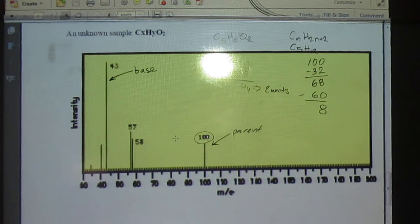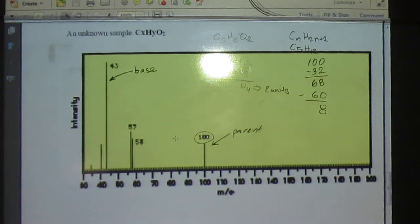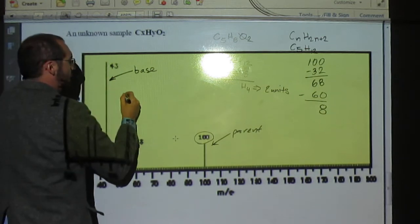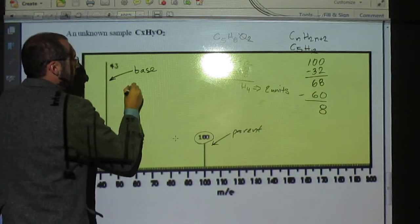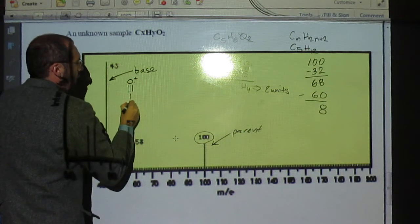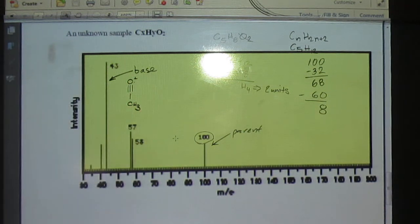So what does that mean? We have two double bonds, or a ring and a double bond, or two rings. But 43, that's one of our common ions that we remember, right? What is that? Do you remember the name of it? The acylium ion. And that tells us oftentimes we have that methyl ketone or methyl carbonyl group.